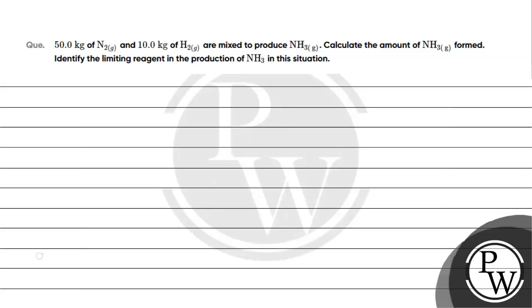Let's read this question. The question says 50 kilos of nitrogen and 10 kilos of hydrogen are mixed to produce ammonia. Calculate the amount of ammonia formed and identify the limiting reagent in the production of ammonia in this situation.